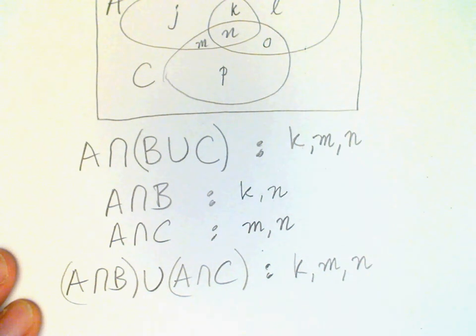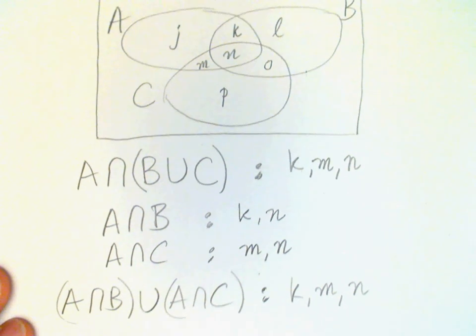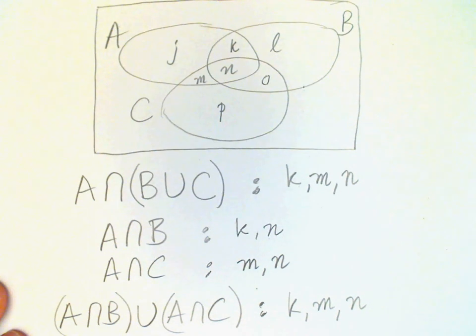And we see that that's identical to the regions defined by the other expression A intersect B union C. And so this simple proof using a Venn diagram demonstrates that the distributive law holds with set operations.